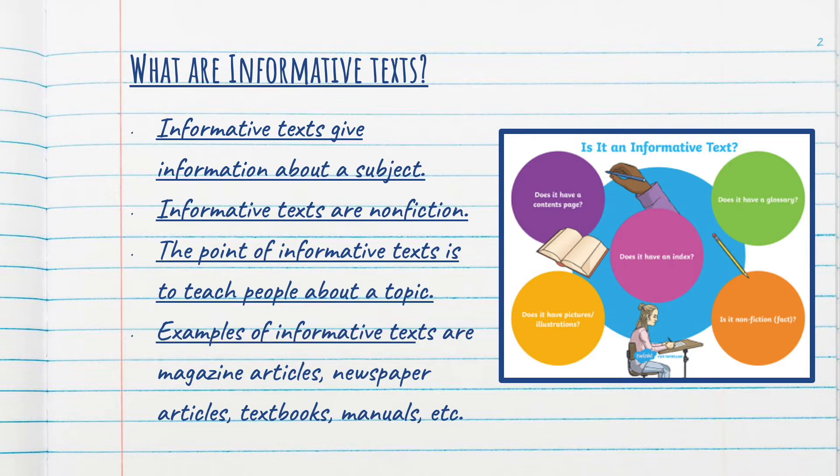Examples of informative texts are magazine articles, newspaper articles, textbooks, manuals, etc.